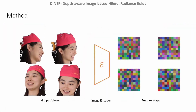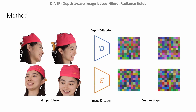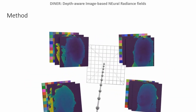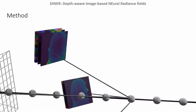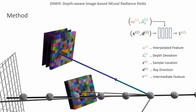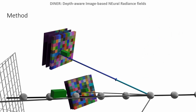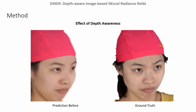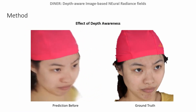Our method, DINER, builds upon this pipeline. As a first step, we add depth awareness. We employ a state-of-the-art depth prediction network to regress depth maps, including standard deviations and expectation values. For every sampling point, we determine the difference between the projected depth value and the sample location. The result is used as an additional conditioning to compute the intermediate features, which are then used to regress colors and optical densities. As a result, we observe improved geometry and higher synthesis quality.